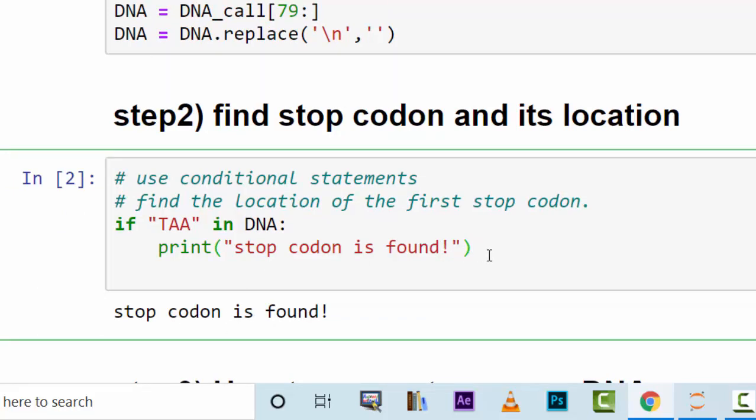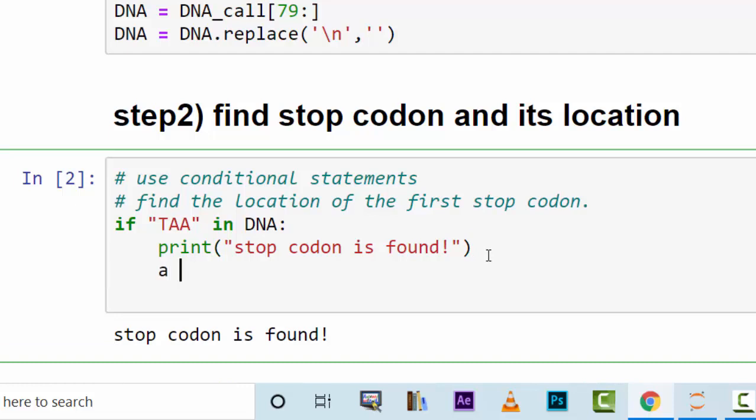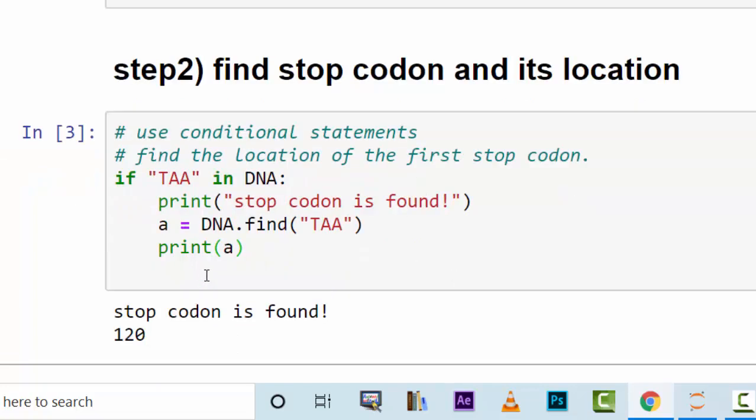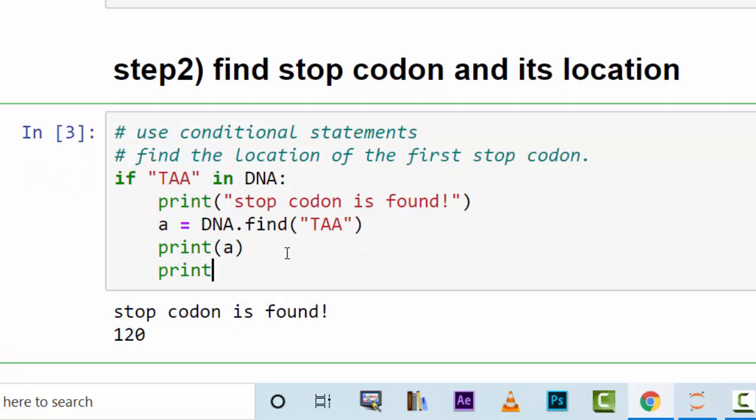That doesn't tell you much. Where is the location? So you could say A is equal to DNA.find, the first instance of the TAA, and print A. It's at nucleotide number 120. You can also print out that nucleotide region. You could say DNA, location A, then A plus 3.